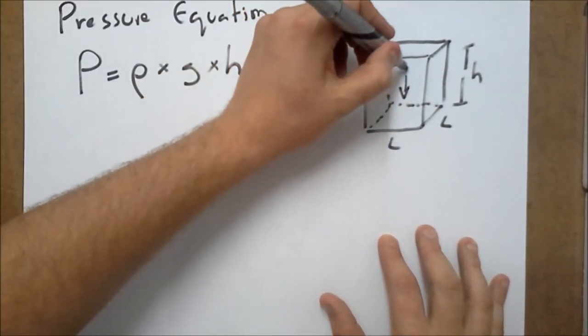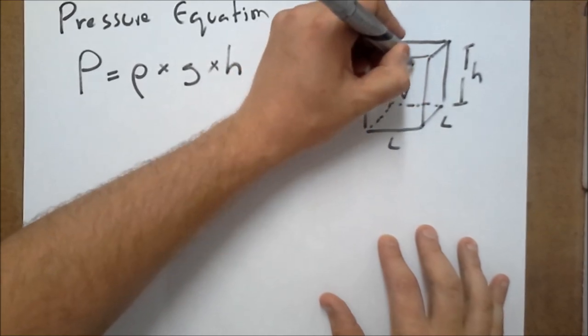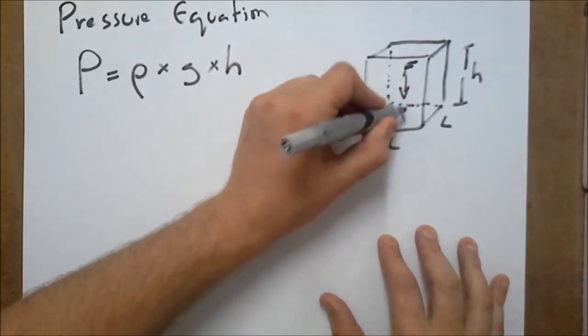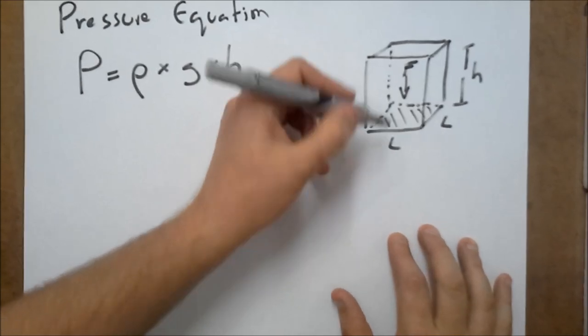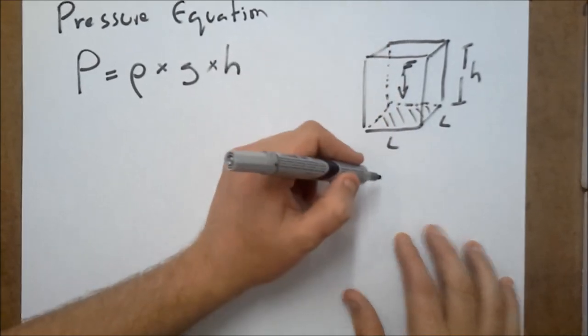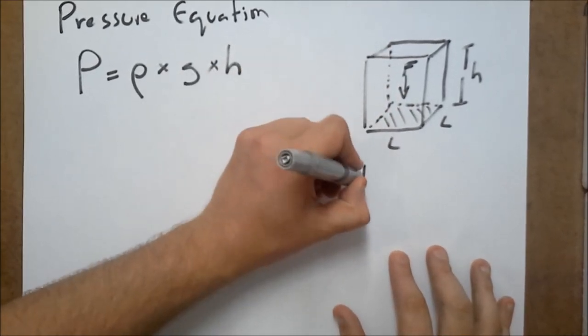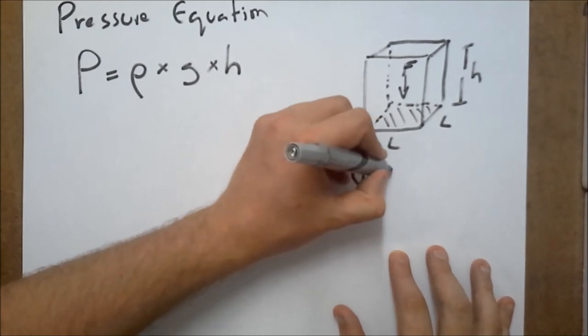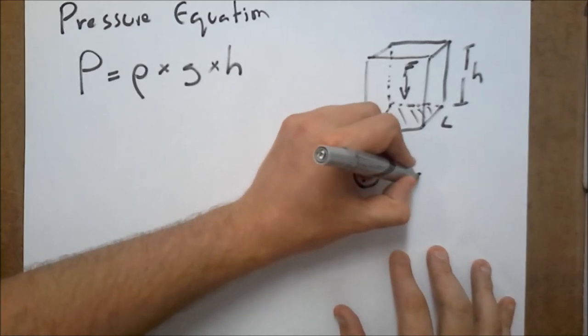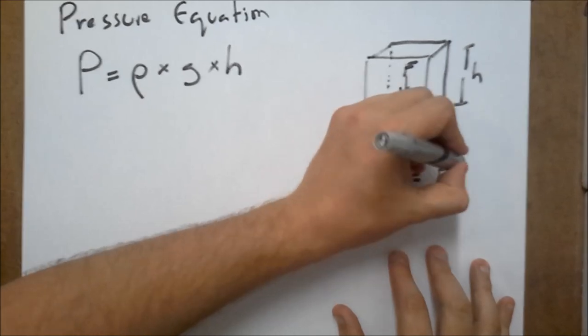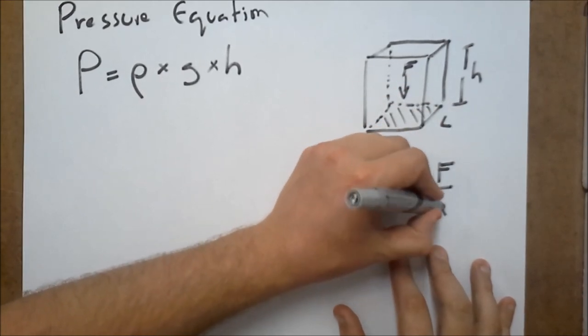Now, the weight of the liquid is going to produce a force over this area. Now, force over area, that is pressure. So, this is what we're going to start off with. Number one, that pressure is equal to force divided by area.